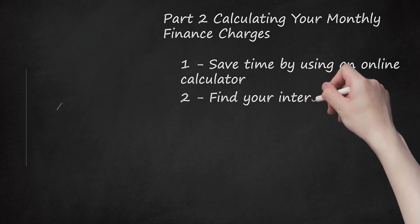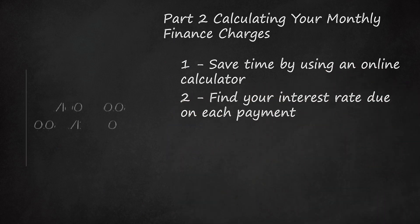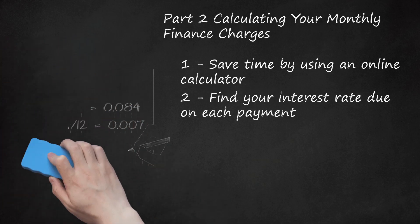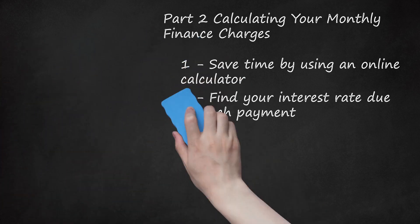Step 2: Find your interest rate due on each payment. Start by converting your APR to a decimal by dividing it by 100. For example, if your APR is 8.4%, then 8.4 ÷ 100 equals 0.084. Next, find your monthly percentage rate by dividing your APR decimal by 12. So, 0.084 ÷ 12 equals 0.007. This is your monthly percentage rate expressed as a decimal.